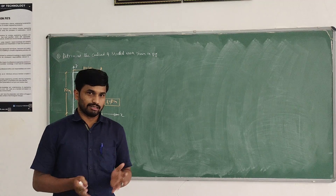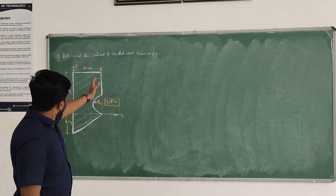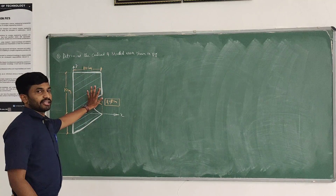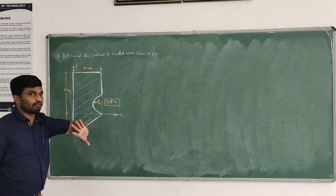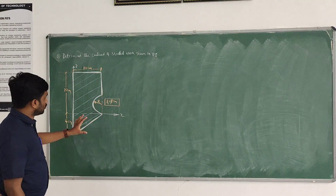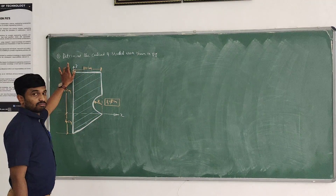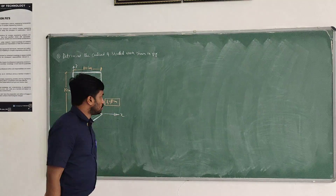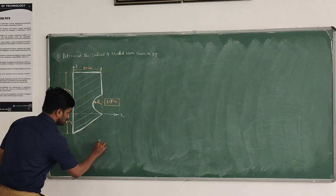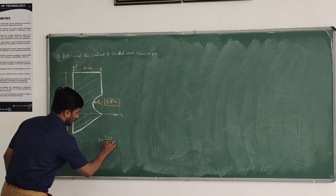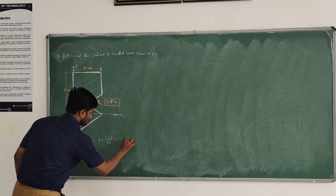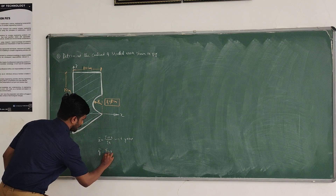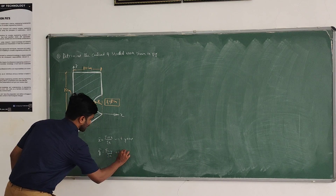We will move on to the next problem. Here, this problem is asking to compute the center of the shaded area. This is a similar kind of problem to what we discussed in the previous section, but with respect to the given axes — x-axis and y-axis. We know that x-bar equals sigma(ax) by sigma(a) with respect to the y-axis, and y-bar equals sigma(ay) by sigma(a) with respect to the x-axis.